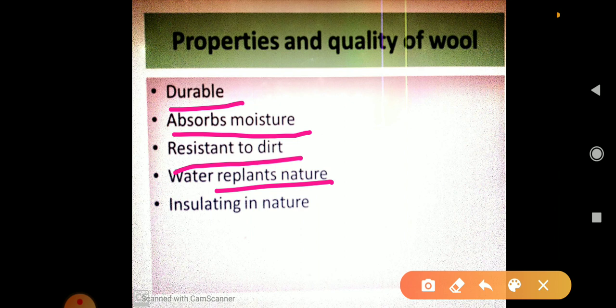Next is insulating in nature. Wool is insulating because tiny gaps are present between the fibers. In those gaps air is filled and this air does not allow the body heat to go outside so that we feel warm.